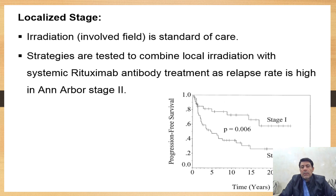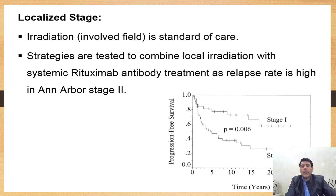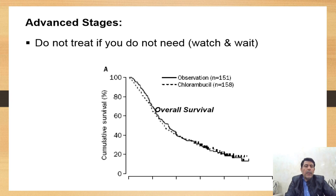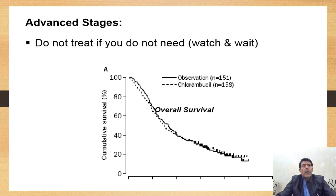Because relapse rate is high in stage two, in localized disease we can combine involved-field radiation with rituximab monoclonal antibody. For advanced stage disease, the patient may benefit from a watch-and-wait approach with separate symptomatic treatment, because if the disease has metastasized to the bone marrow, spine, or brain, chemotherapy or rituximab may offer no benefit and only supportive care is appropriate.